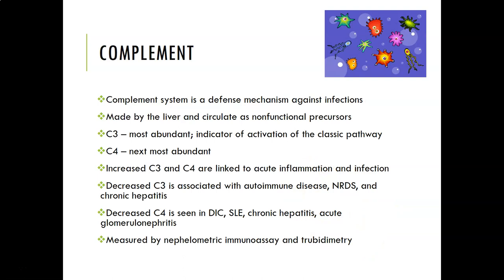The complement system is a defense mechanism against infections, made by the liver and circulating as non-functional precursors that must be activated. C3 is the most abundant and is an indicator of activation of the classic pathway; C4 is the next most abundant. Increased C3 and C4 are linked to acute inflammation and infection. Decreased C3 is associated with autoimmune diseases, newborn respiratory distress syndrome, and chronic hepatitis. Decreased C4 is seen in DIC, SLE (lupus), chronic hepatitis, and acute inflammatory nephritis. These are usually measured by nephelometric immunoassay and turbidimetry.